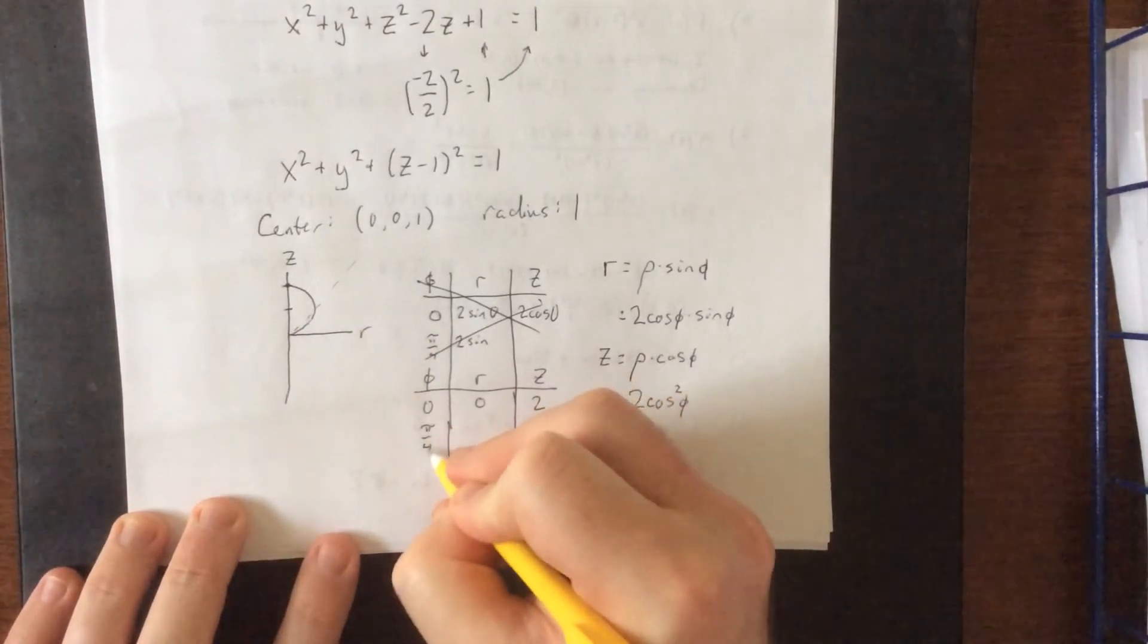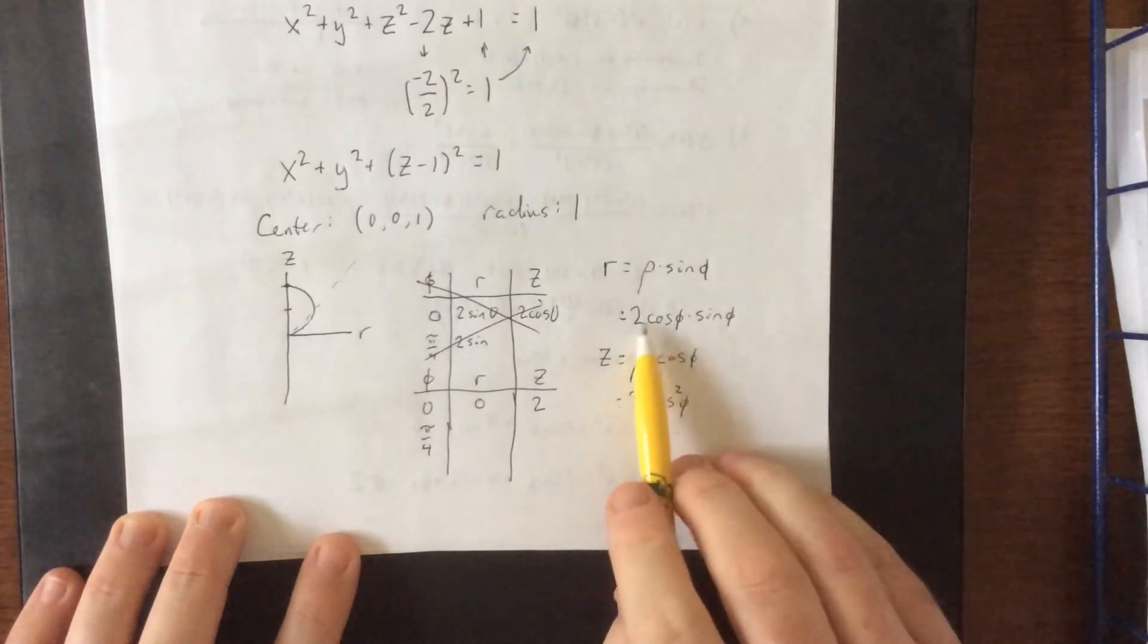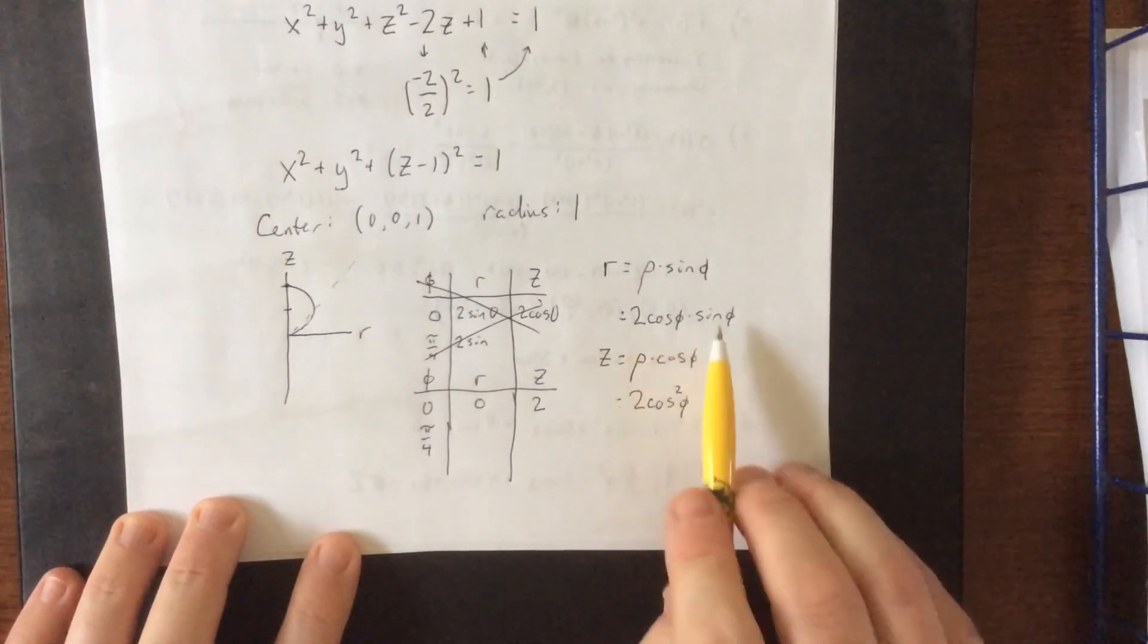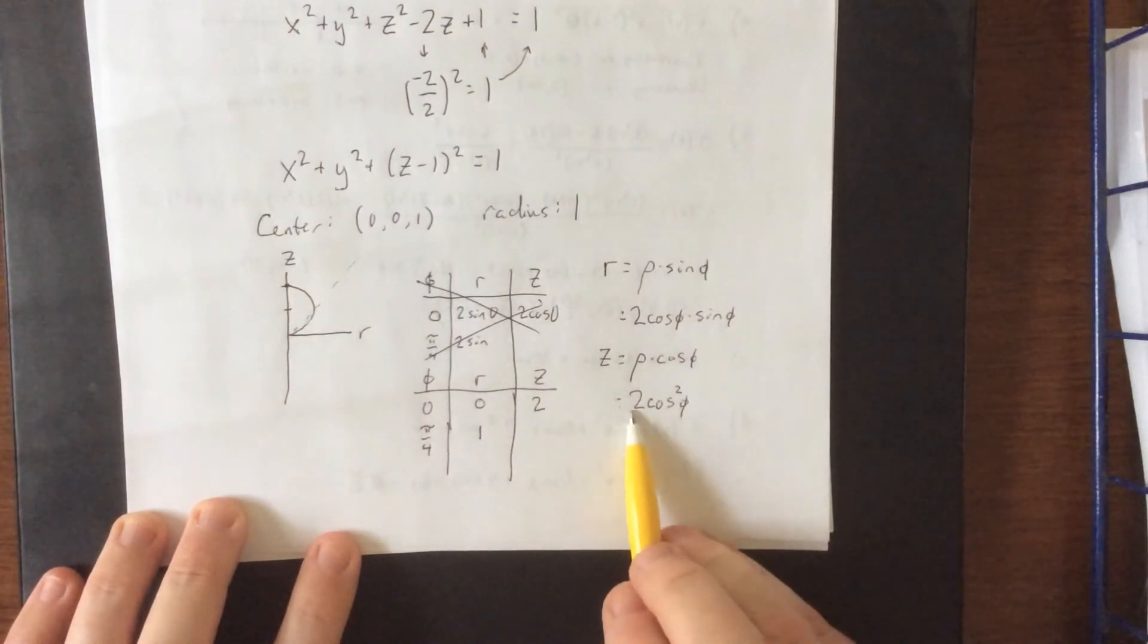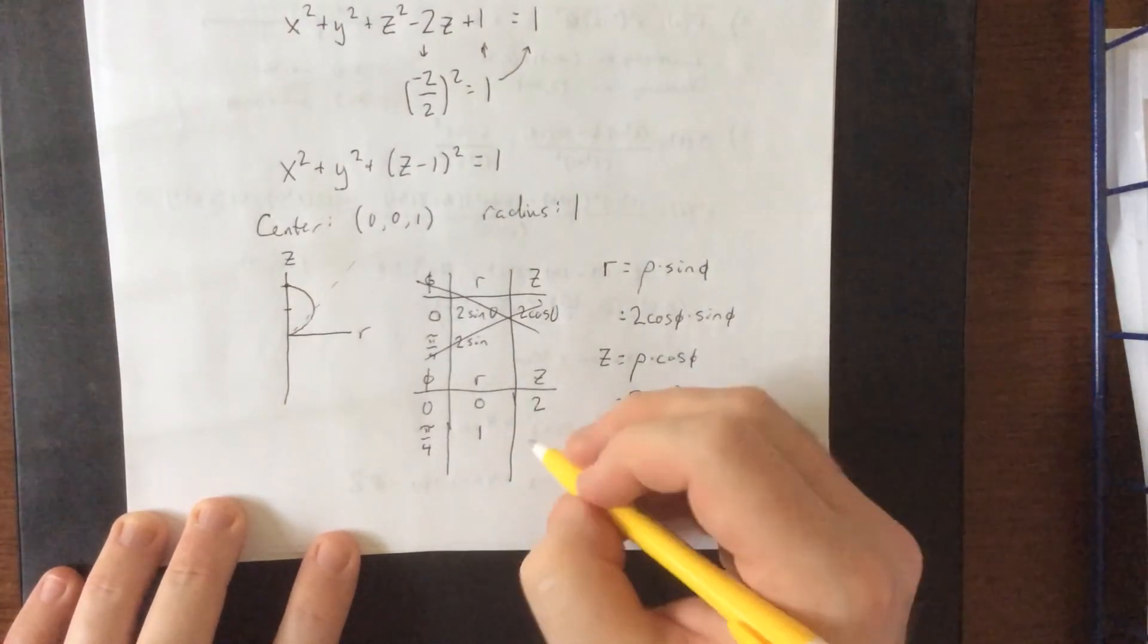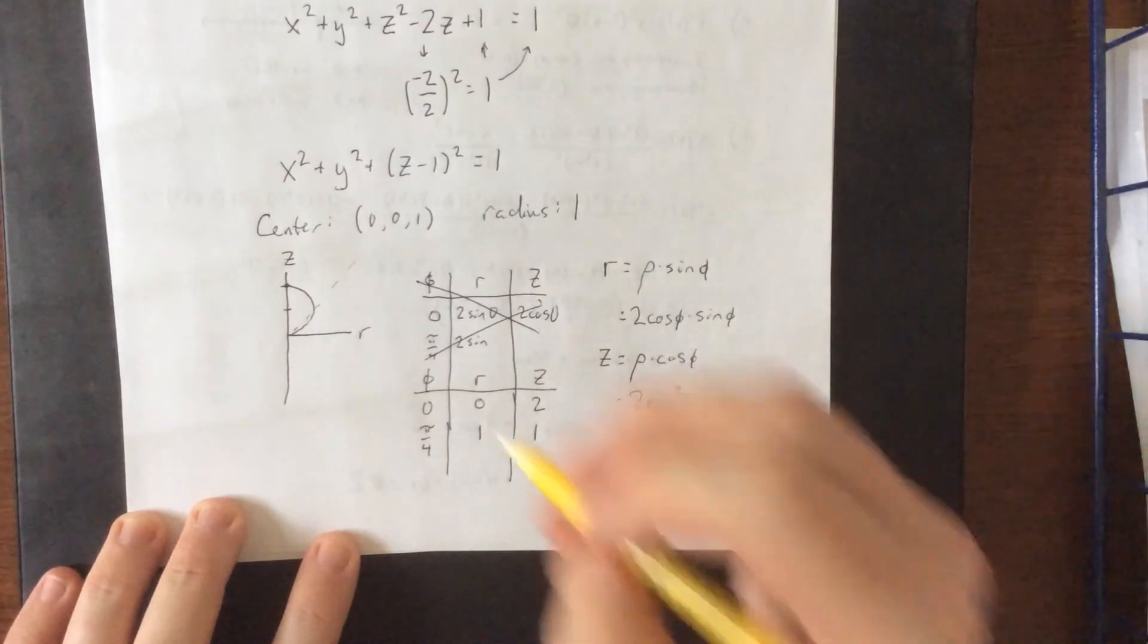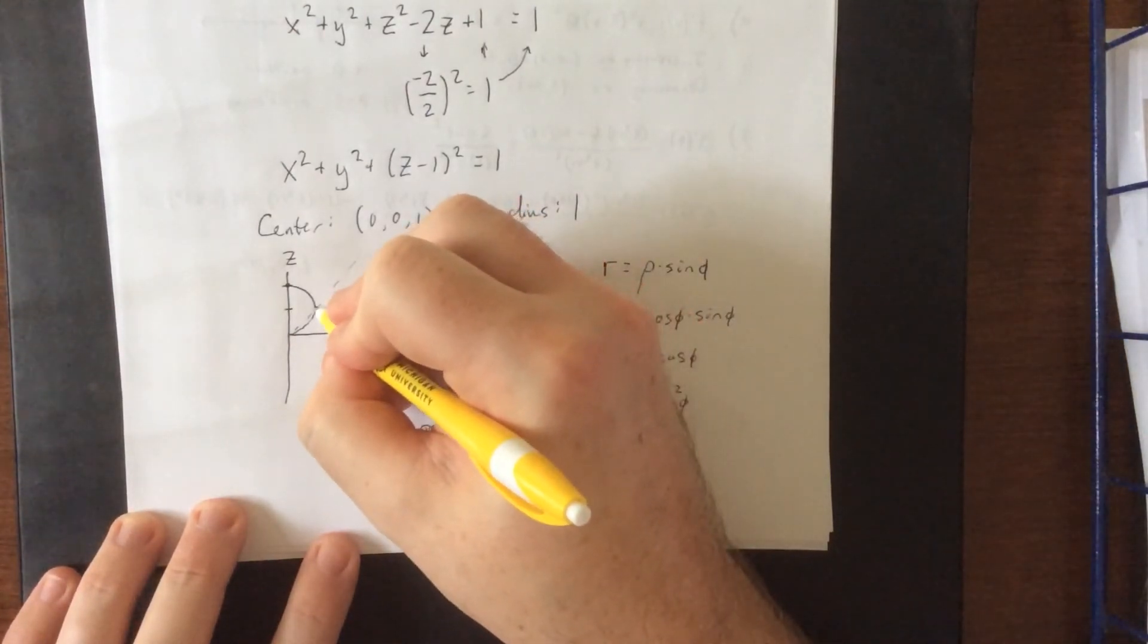At pi over 4, this would be 2 times root 2 over 2 times root 2 over 2. That actually winds up being 1. And this is 2 times root 2 over 2 quantity squared. This would be 1 as well, which is how we get this point right here.